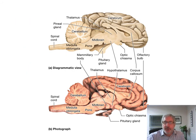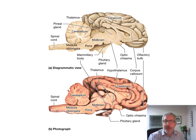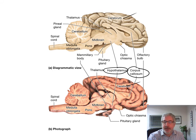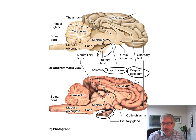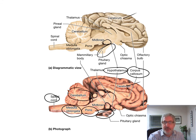Here's a drawing and diagram along with an actual sheep brain. You can see the cerebrum, the corpus callosum, the hypothalamus down here, and the pituitary gland sticking down. The mammillary body is this hump right here. Then we have the midbrain with the corpora quadrigemina — superior and inferior colliculi. And we have the spinal cord, medulla oblongata, pons, and cerebellum.